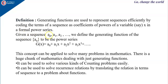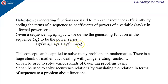That is, given a sequence — suppose a0 is the first term, a1 is the second term, a2, and so on — we define the generating function of the sequence an to be the power series g(x), which is equal to a0 plus a1·x plus a2·x² and so on.